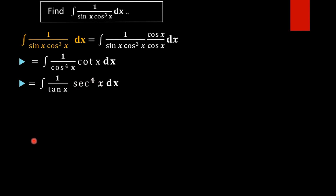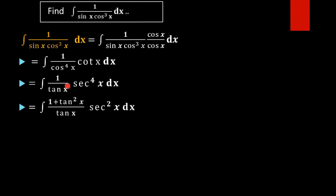Before that, sec⁴x can be rewritten as sec²x · sec²x, and one of the sec²x can be rewritten in the form 1 + tan²x. That is, sec⁴x converts into sec²x · (1 + tan²x) dx, using the trigonometric identity.